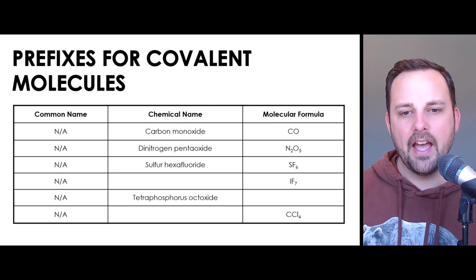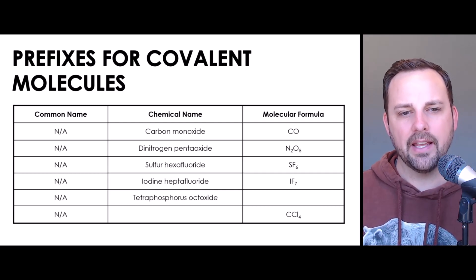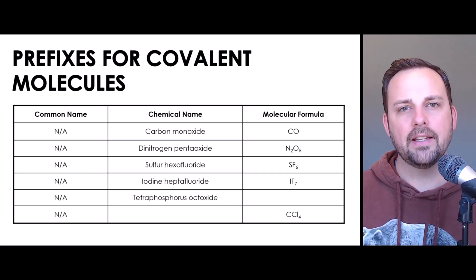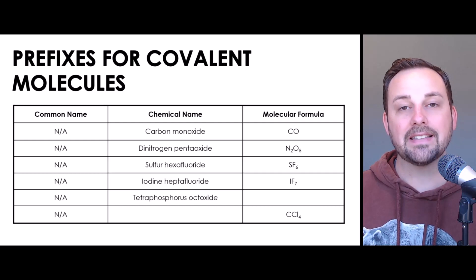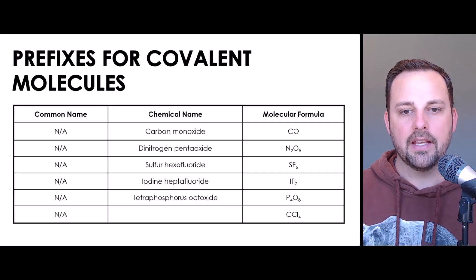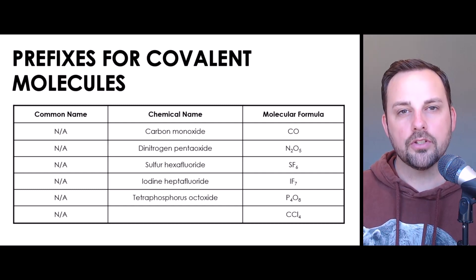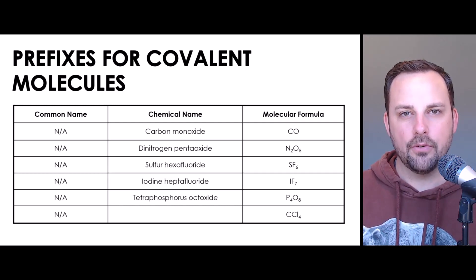The next one is similar: IF7. The correct answer is iodine heptafluoride. Iodine is by itself so it gets no prefix — we could include mono and that would still be correct, but it's not necessary. For fluorine, there are seven of those atoms, so we give it the prefix hepta. The next one is a really big, complicated-sounding molecule called tetraphosphorus octaoxide. The correct answer is P4O8. Phosphorus is represented with the letter P; the prefix tetra tells us there are four, so we write P4. Octa refers to eight, so we write P4O8.